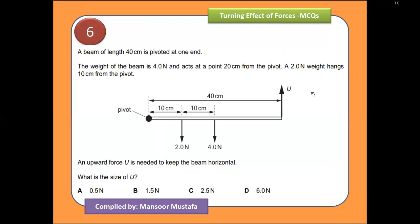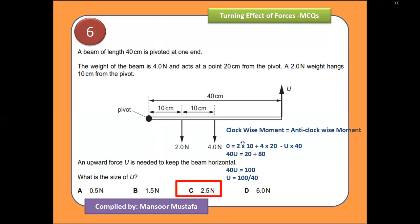In the next question, u is a force acting upward with the pivot on the left side. There are three forces: 2 newtons and 4 newtons acting downward, and u acting upward (taken as negative). The distance of u from the pivot is 40 centimeters, 2 newtons is at 10 centimeters, and 4 newtons is at 20 centimeters. Solving for u gives an answer of 2.5 newtons.